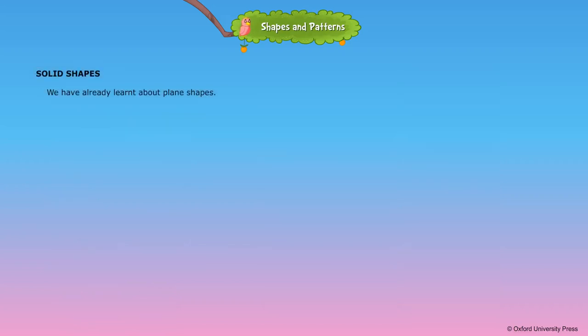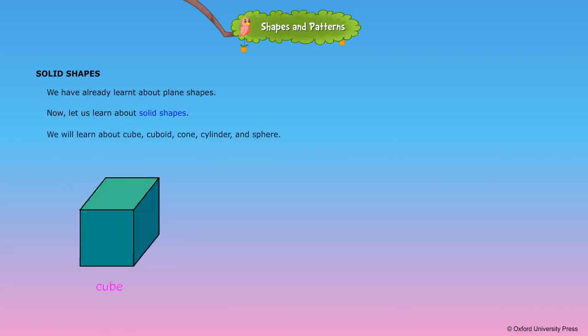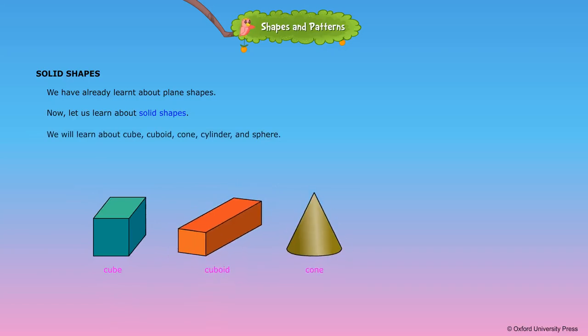Solid shapes. We have already learnt about plane shapes. Now, let us learn about solid shapes. We will learn about cube, cuboid, cone, cylinder, and sphere.